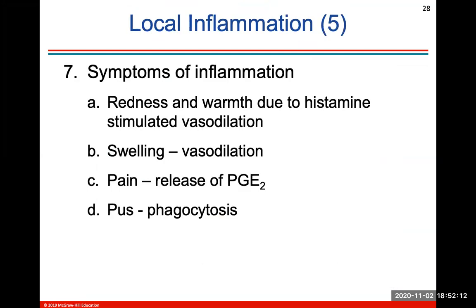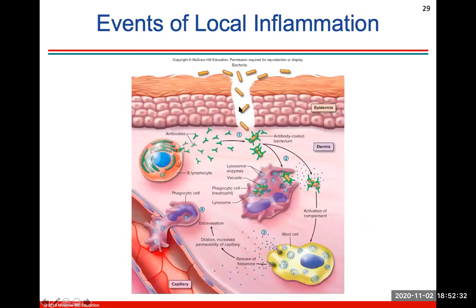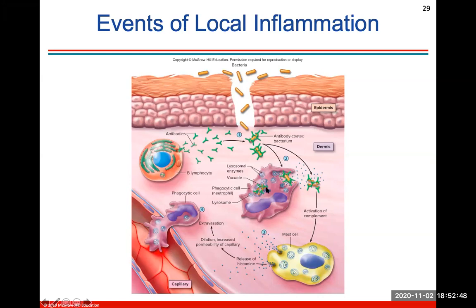Local inflammation symptoms: redness and warmth are due to histamine-stimulated vasodilation of blood vessels, swelling, pain, and the release of prostaglandins. Pus is just the result of phagocytosis engulfing that bacteria and then releasing it. This takes us through the events of local inflammation: the release of histamine, the phagocytic cell engulfing, the antibodies released to coat bacteria and produce clumping, and then the lysosome to break apart that bacteria. It's a coordinated response — a beautiful way your body gets rid of bacteria or foreign agents.